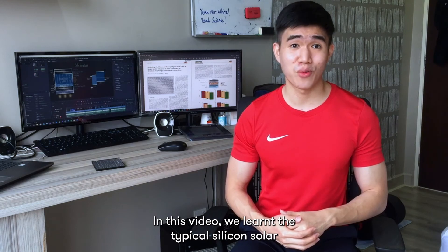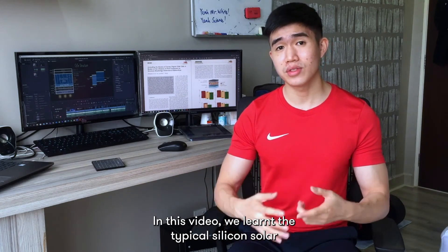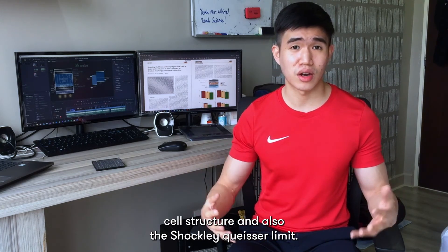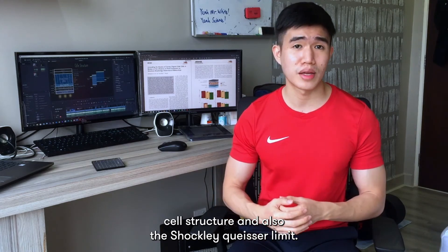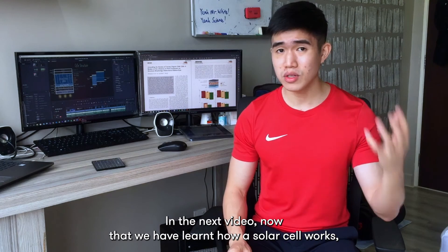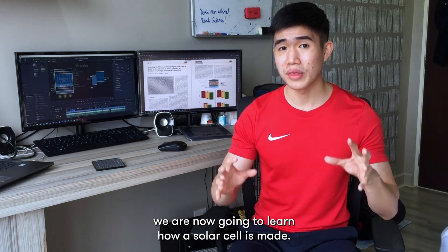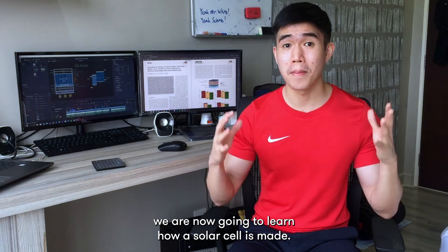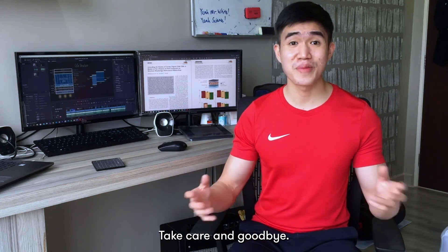That's it guys for chapter 5.1. In this video, we learned the typical silicon solar cell structure and also the Shockley-Quaser limit. In the next video, now that we have learned how a solar cell works, we are now going to learn how a solar cell is made. Take care and goodbye.